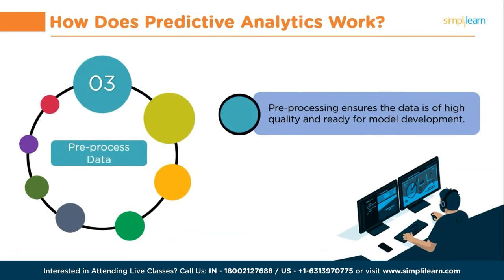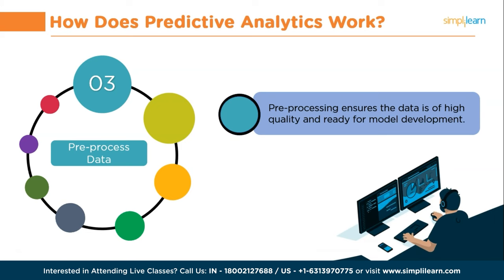After that, you need to pre-process data. Raw data is rarely in an ideal state for analysis. So, before developing predictive models, data needs to be pre-processed properly. This involves cleaning the data to remove any kind of anomalies, handling missing data points, and addressing extreme outliers that could be caused by errors in input or measurements. Pre-processing ensures that the data is of high quality and ready for model development.